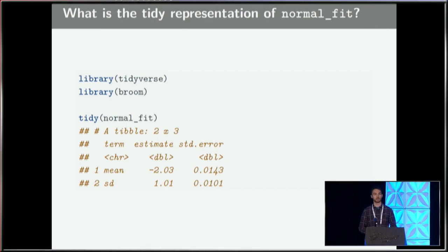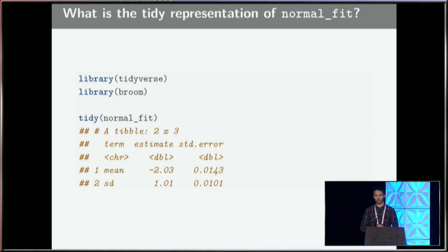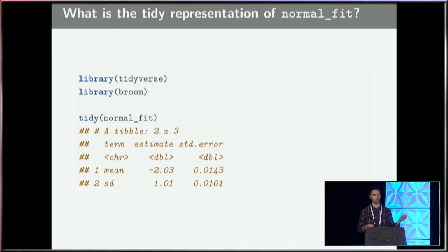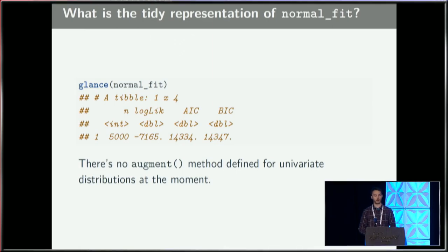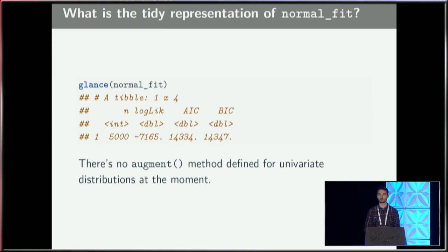When we tidy this thing up, we call tidy on the normal fit and Broom cleans it up. We get a tibble with three columns whose names are pretty much always going to be the same: the term column tells us what parameter we're working with, the estimate gives the calculated value, and standard error addresses our uncertainty. Calling glance on a simple normal model gives simple diagnostics: how many data points were fit, total log likelihood, and other criteria. There isn't an augment defined in Broom for these univariate distributions yet, though you could define a log likelihood contribution if you wanted.